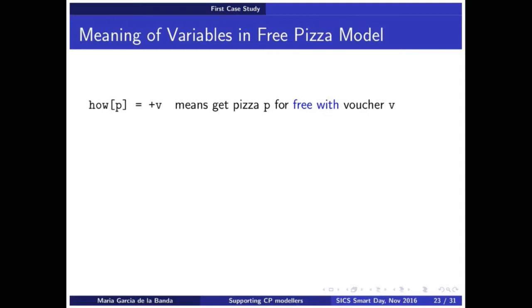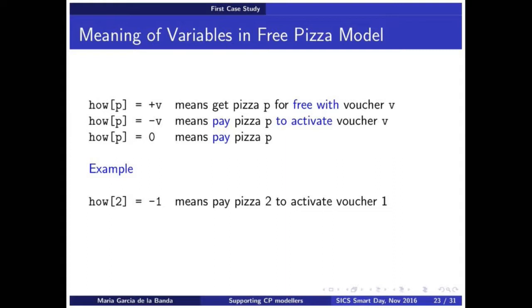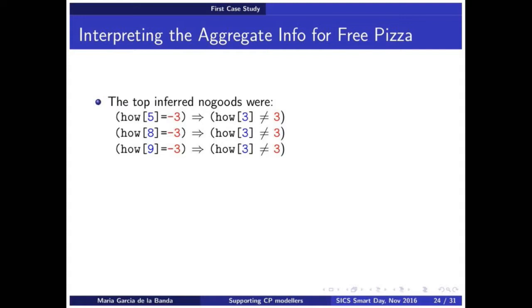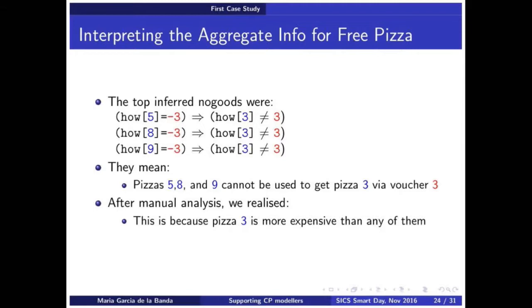Now, to understand what we found, you have to understand how it is represented. So basically, P of V plus means that we can get pizza P for free with voucher V. If it's positive, yeah, it's for free, voucher V. If it's negative, we have to pay for it. But at least we activate a voucher. And if it's zero, we just pay it and nothing else. So something like this says, I have to pay for pizza two to activate voucher one. And this says, I can get four for free using voucher one. So when we started looking at the top no goods, we realized that this really, what was telling us, is that none of those pizzas, five, eight of none, can be used to get pizza three via voucher three. That's what it says when you actually study and go back to the thing. And of course, this is true because when we look at the data, it was telling us that pizza three is more expensive than any other ones. So you cannot get it for free because it's more expensive. And in fact, the voucher number is irrelevant. It doesn't matter whether it's voucher three, four, five, six, seven. You can never get that pizza for free.